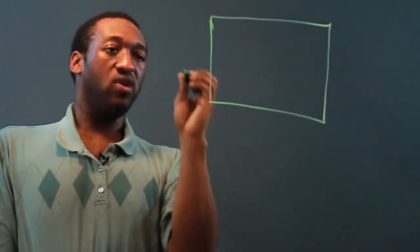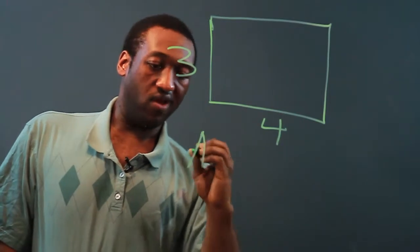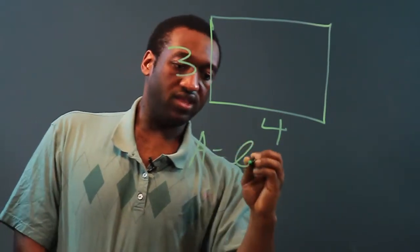So let's say we have a width of 3 and a length of 4. Now the formula for area of a rectangle is length times width.